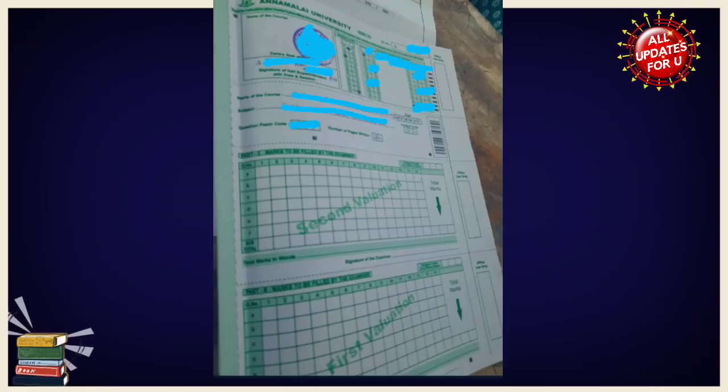First, you have the OMR sheet where you need to fill in two important things: the subject code and your registration number. Fill in the subject code first, then the registration number.